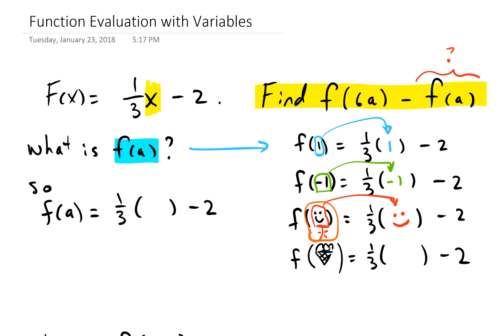So our final one: what is f of ice cream cone? That's not a piece of pizza, it's an ice cream cone—I know you guys are thinking it's a piece of pizza, it's an ice cream cone. We have 1/3 times ice cream cone minus 2. So honestly, it doesn't matter what goes in there. All we do is just plug that thing into x wherever x appears in the function.